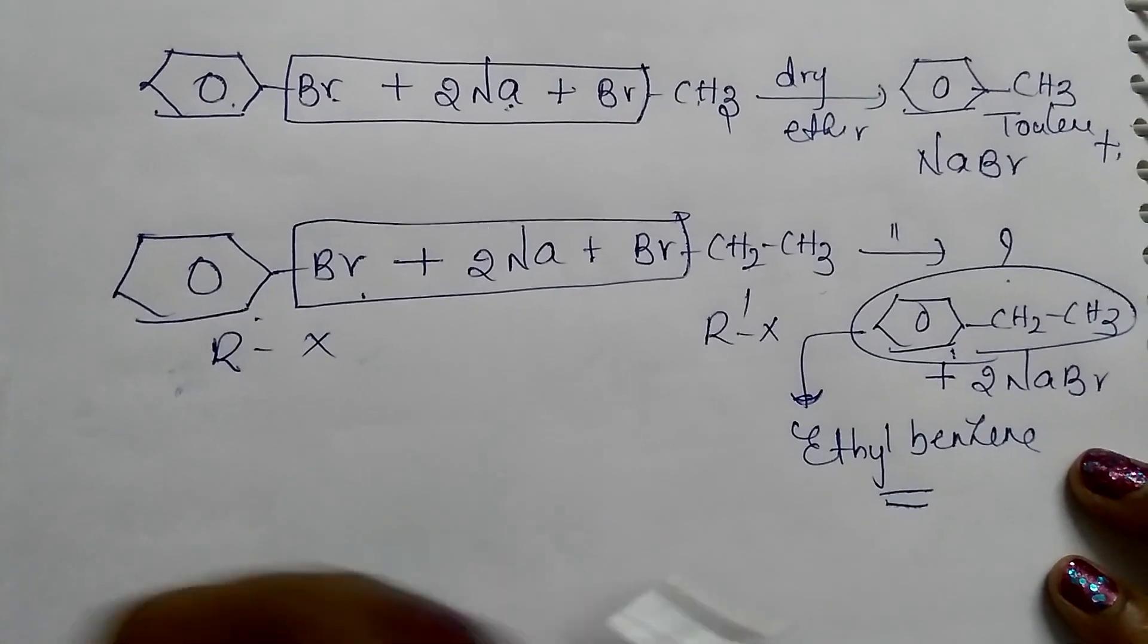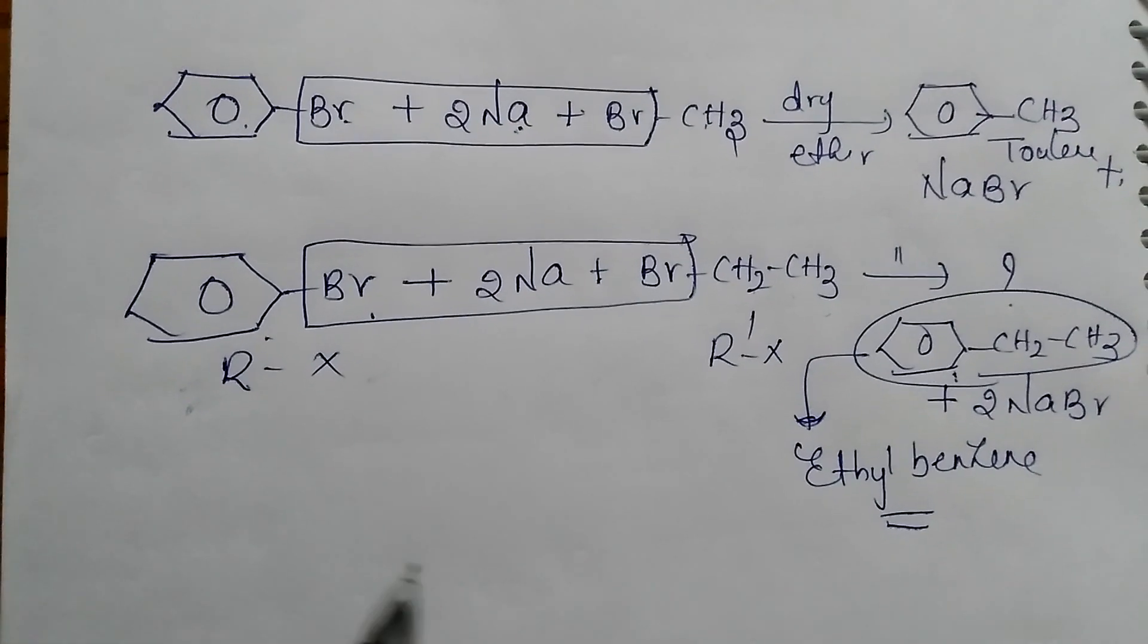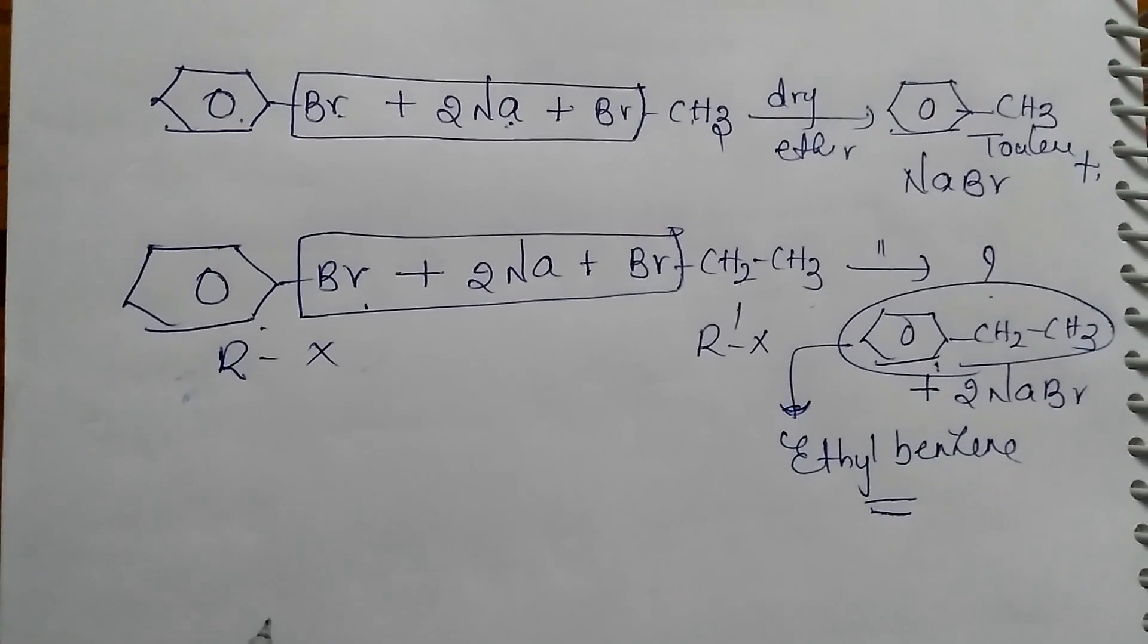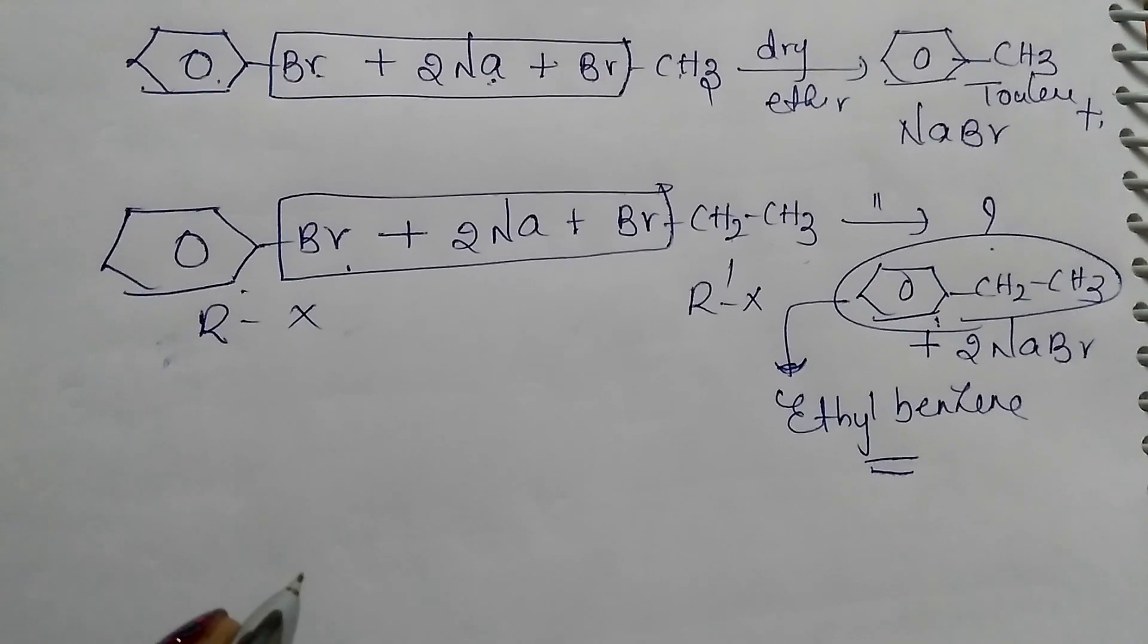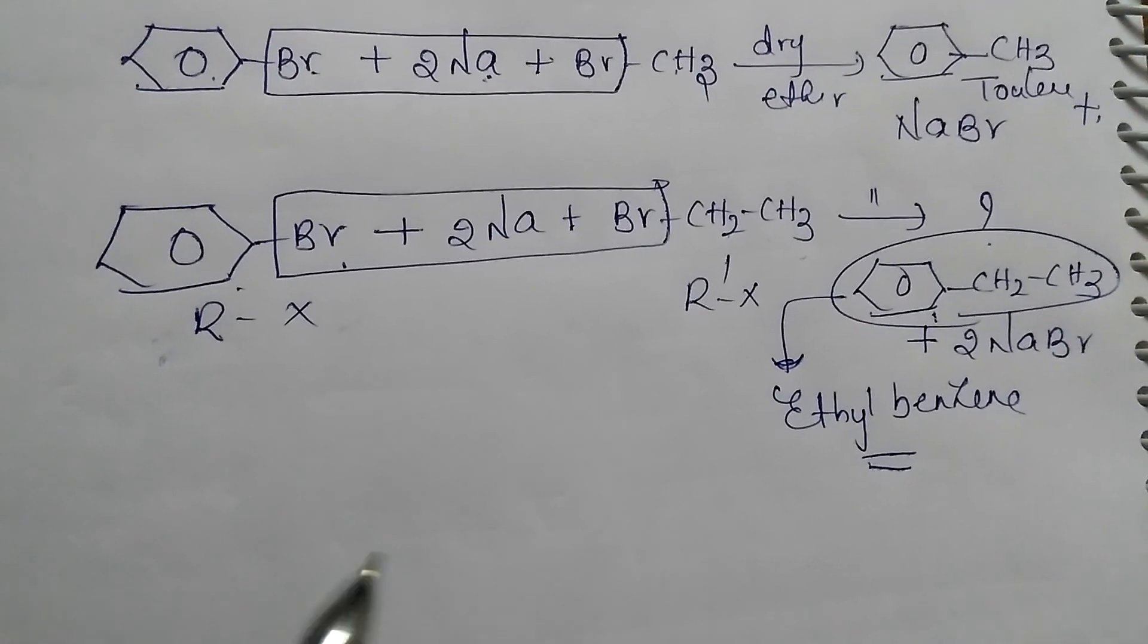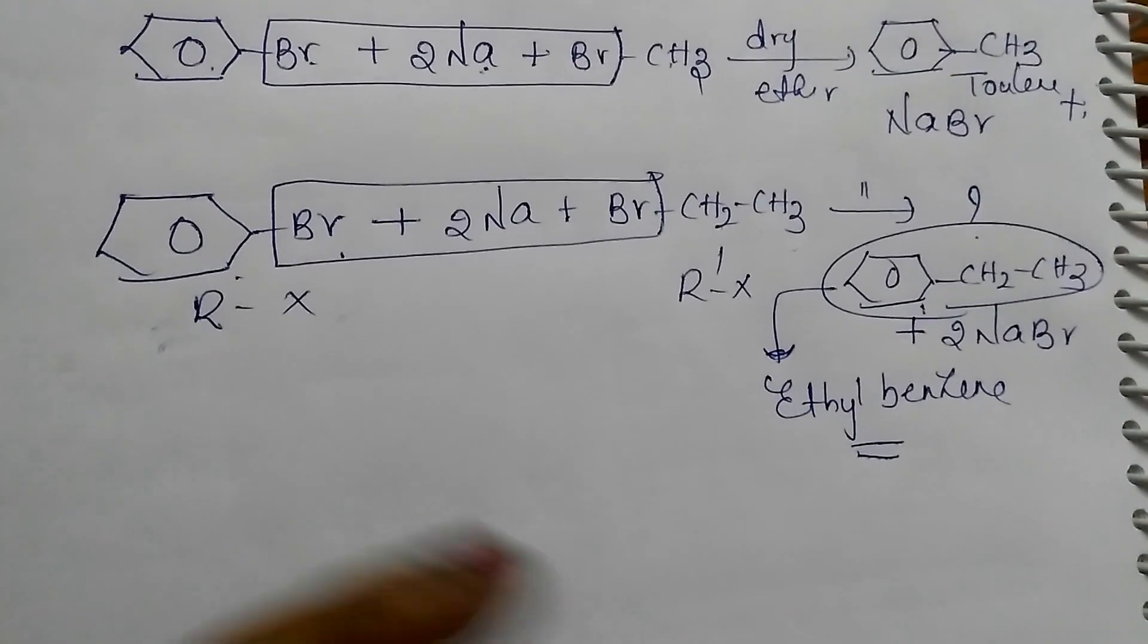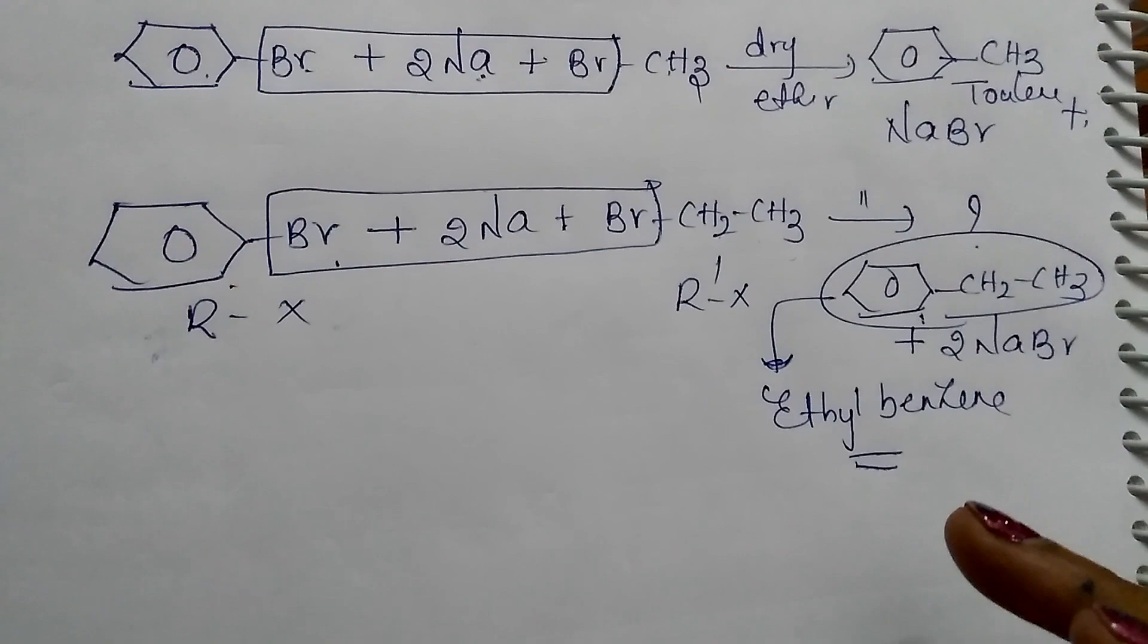Along with ethyl benzene, two more byproducts are formed during Wurtz-Fittig reaction. Wurtz-Fittig reaction is preferred to Friedel-Crafts reaction because long chains can be easily introduced into the benzene ring without any danger of rearrangement reactions.